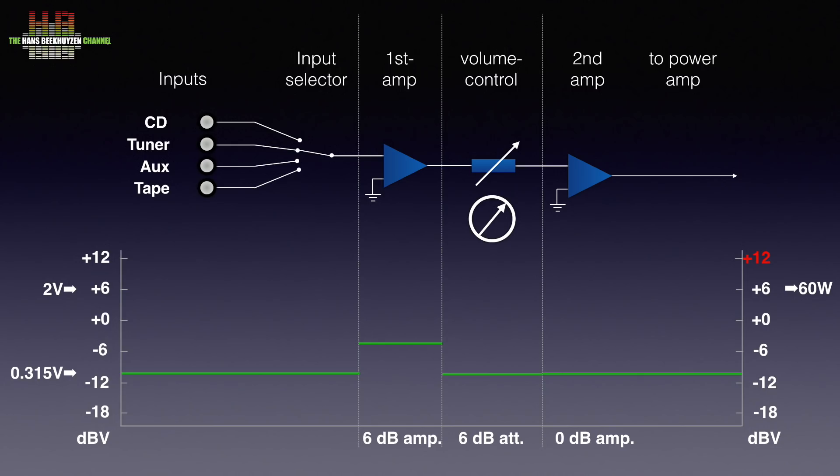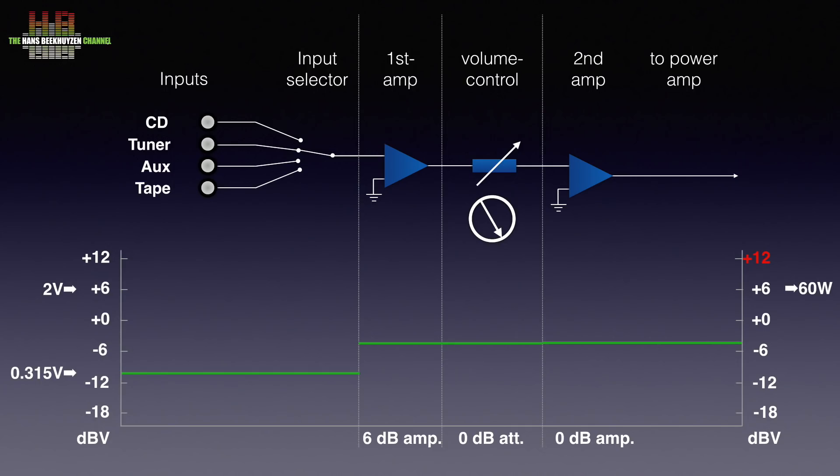Leaving the amplifier setting as it was, we see a maximum pre-amp output of minus 10 dBV. We can reduce the attenuation of the volume control to 0 dB, but then we still are 10 dB short. So the designer needs to add an extra 10 dB gain in the first amplifier stage to a total of 16 dB gain.